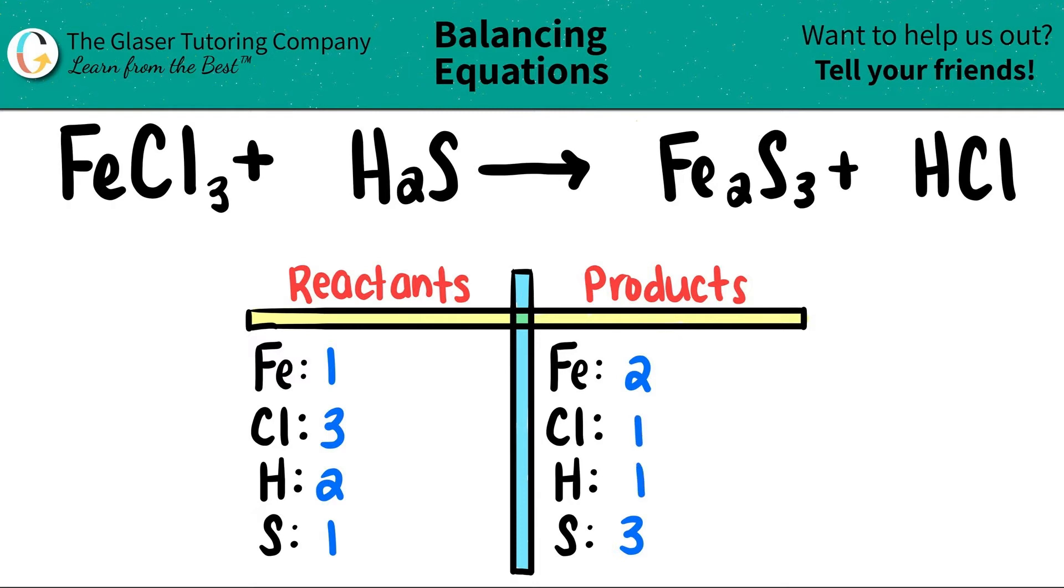Now we just balance by multiplying a lower number by a whole number to get to the higher number. So let's give it a shot. The first one I see is iron. Let's see if it could work. One times what will get me to two? One times two.